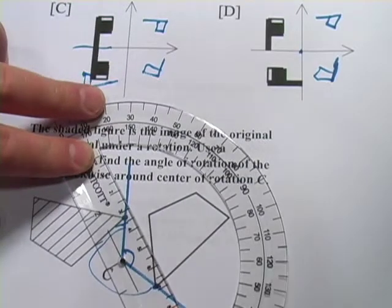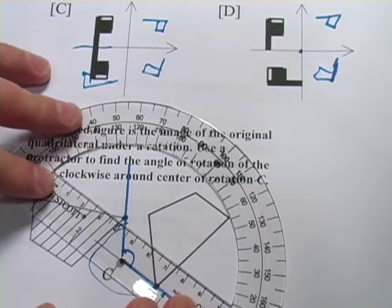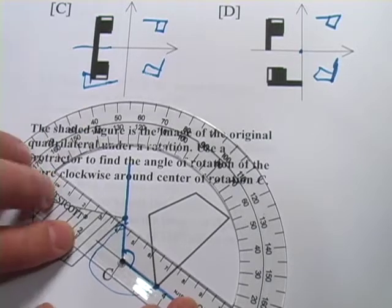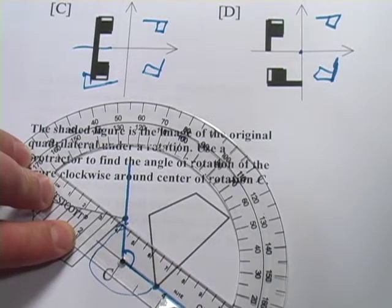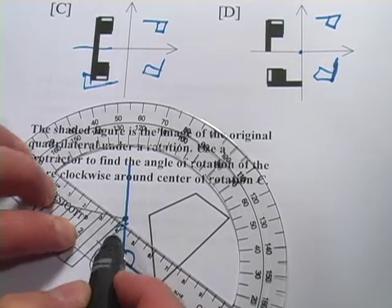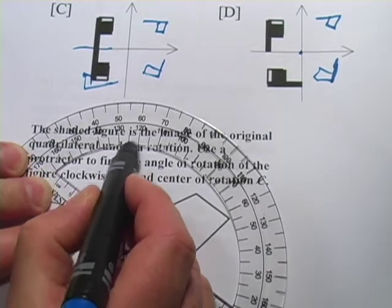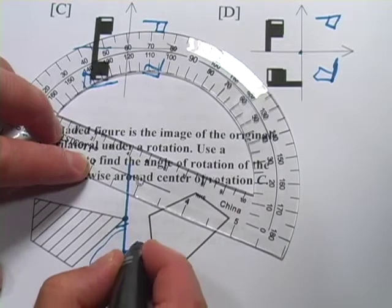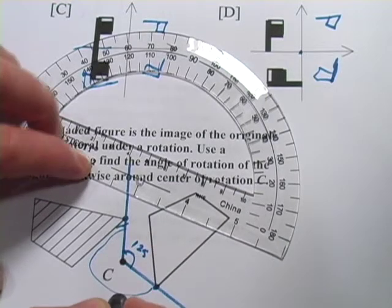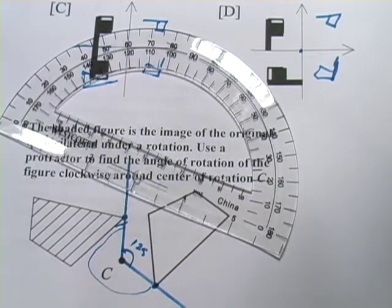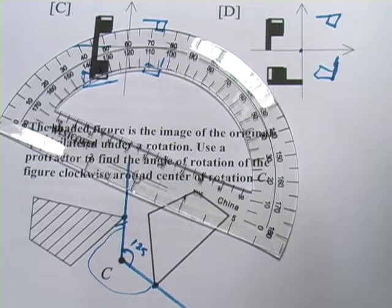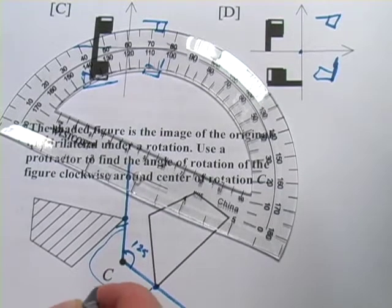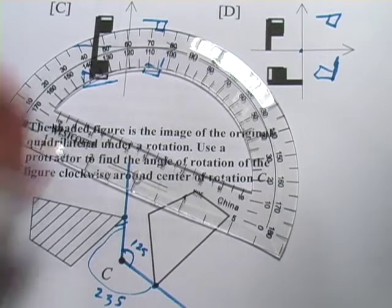So what I'm going to do is measure this angle here and then subtract from 360 to get this angle on the outside because I don't have a 360 degree protractor. So what I'm going to do here is line up one line along the baseline of my protractor and then follow this other line on and it looks like it's going to be 125.